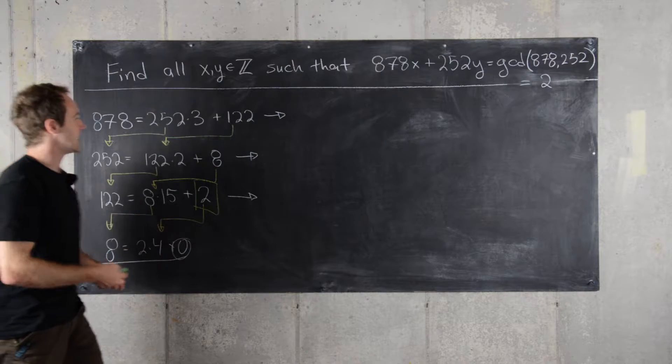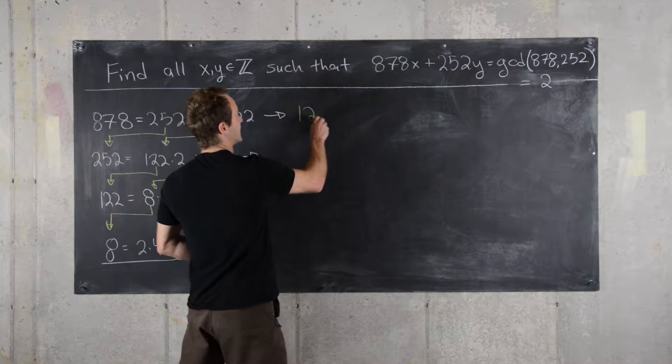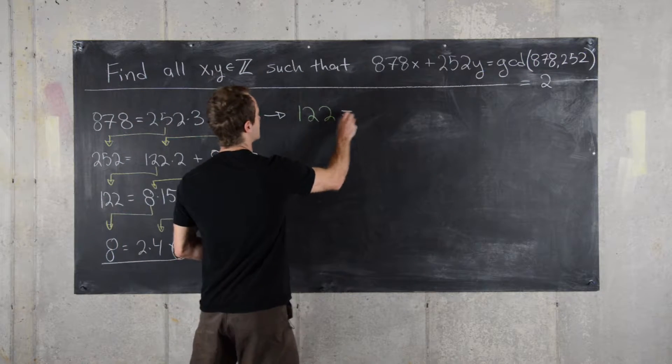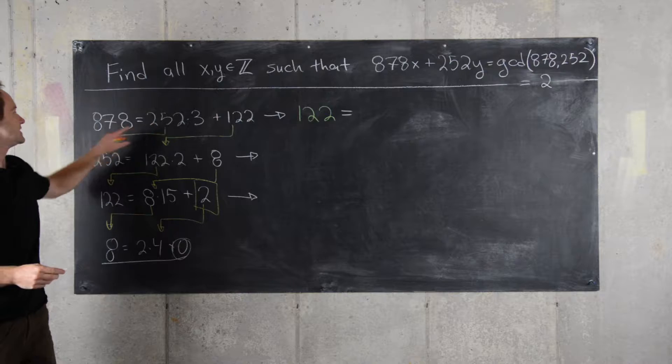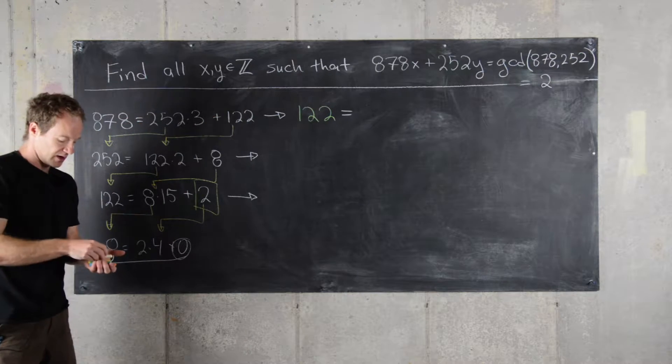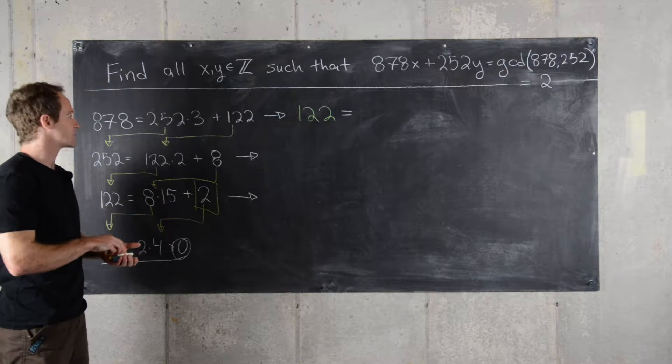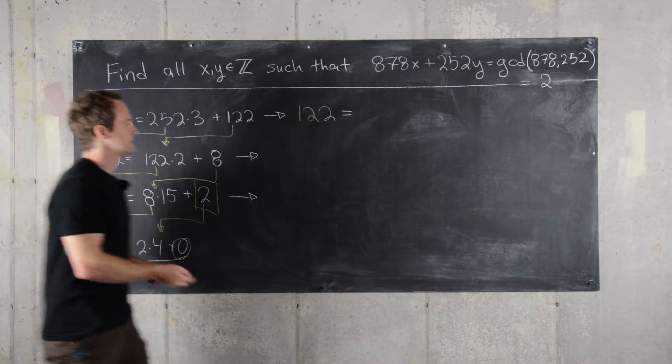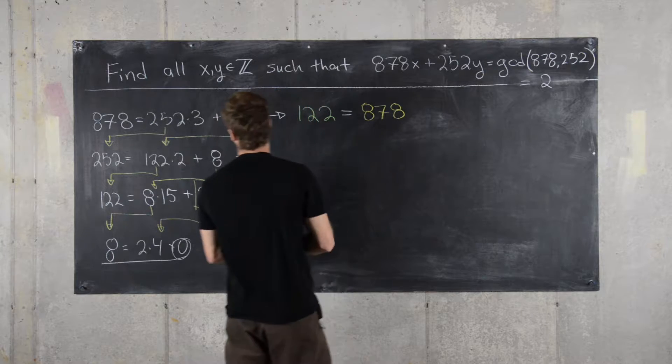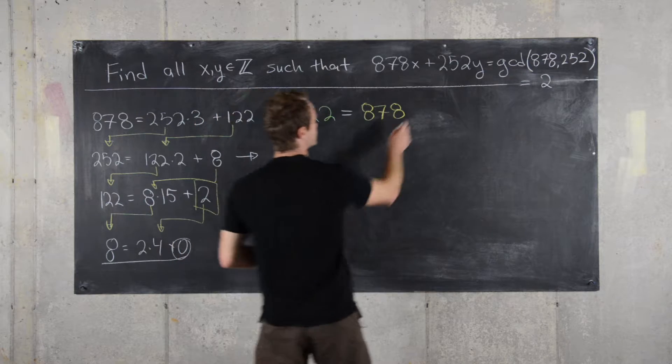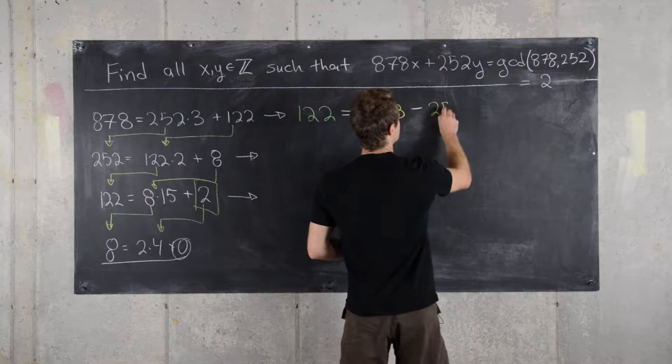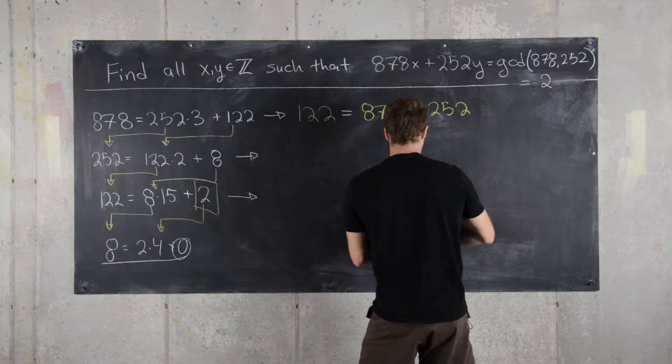Let's say we have 122 equals, and then I'll write 252 and 878 in yellow since those are the numbers that we want to express everything in terms of in the end. So this is 878 minus 252 times 3.